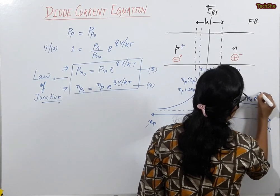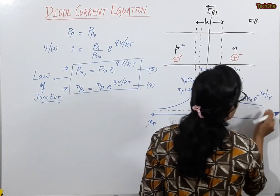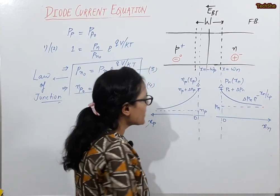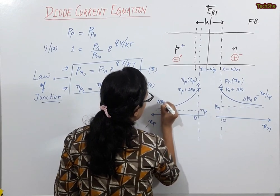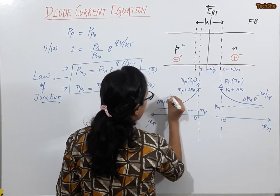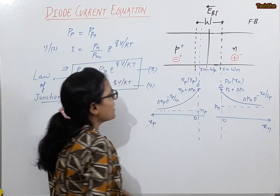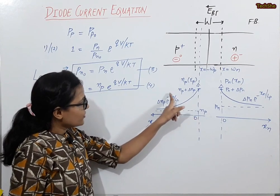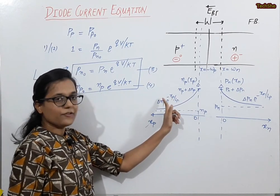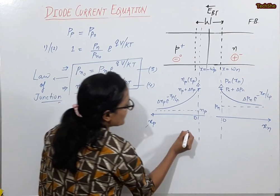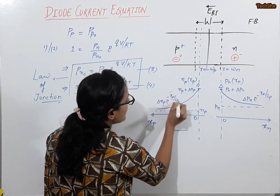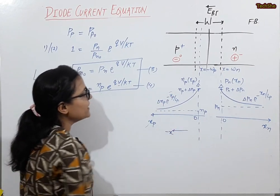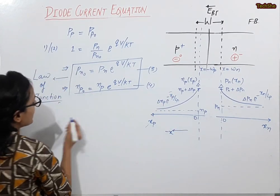The minority carrier distribution is exponential. On the N-side, the injected excess holes are: ΔPN(xN) = ΔPN × exp(−xN/LP), where LP is the diffusion length for holes. On the P-side: ΔNP(xP) = ΔNP × exp(−xP/LN). Since xP is negative in direction, the exponential becomes positive, giving an overall positive exponential on that side. This is our distribution plot.